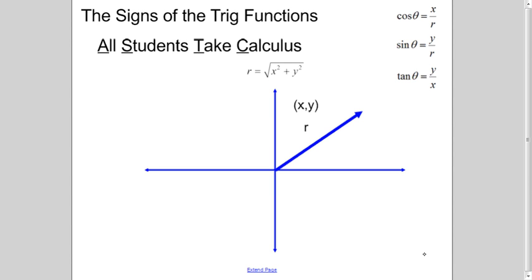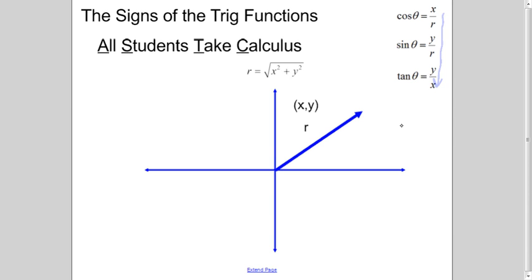Hello, and welcome to this video that is going to discuss the signs of the trig functions for angles whose terminal side lies in one of the four quadrants — i.e., the terminal side is not on an axis. So you have an idea what we're talking about here. We're going to take a look at where these values are positive and where these values are negative.